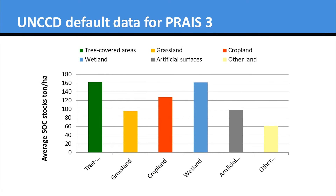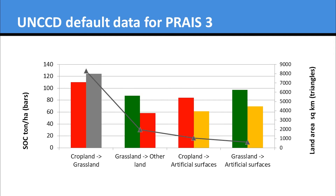There are also graphical summaries provided within the summary documentation to countries, which display the same data within the tables but give an easier and quicker way to access the data and differences between the different classes. Here is one showing changes in carbon stocks per land use class that has changed in that period and the proportion of area in each.